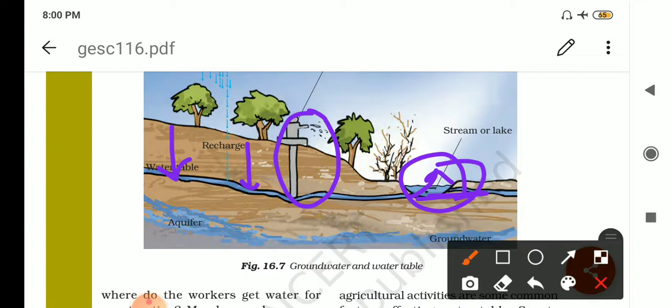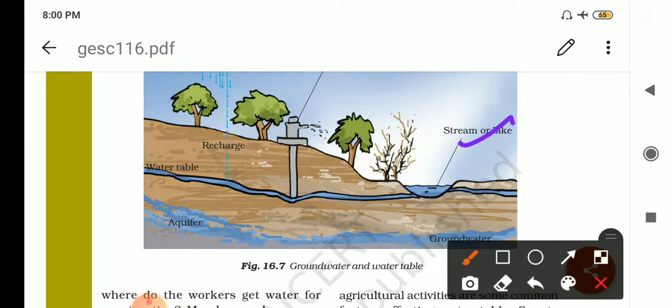Underground water surfaces in the form of springs and wells. As here you can see, stream is also there, and in the picture it is shown here. In wells, boring is also done till the water table is reached, up to water table, till the water table is reached. And now the water is pumped out from tube wells or hand pumps.